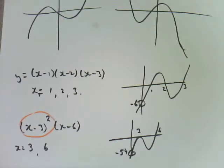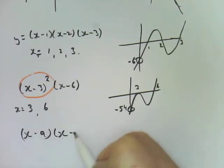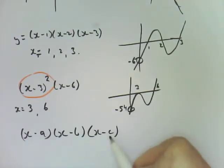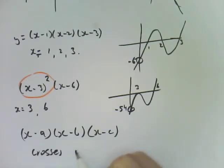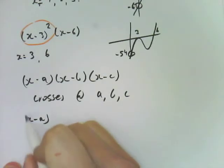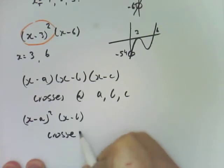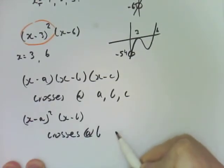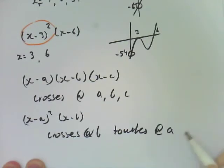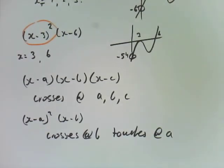So if you've got just (x-a)(x-b)(x-c), then it crosses at a, b and c. If you've got (x-a) squared, (x-b), then it crosses at b and touches at a. So that's how that works. So you should be able to do all of exercise 3H using that information there.